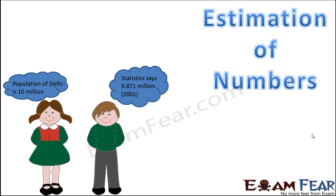When we deal with very large numbers, a small difference doesn't really matter. For example, if you invited 10 people to your house and 2 didn't arrive, you feel their absence because only 8 of 10 are there. But if you invited 1,000 people and 2 didn't come, you might not even realize who was absent because the total number is so large.